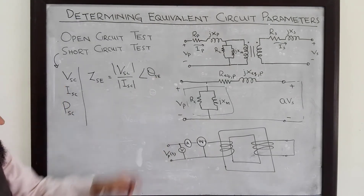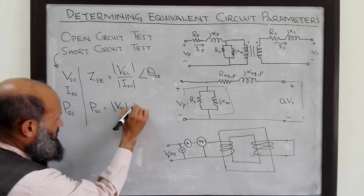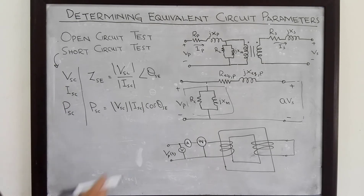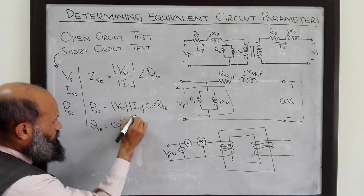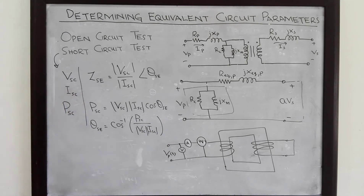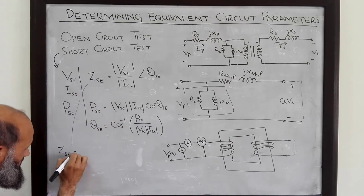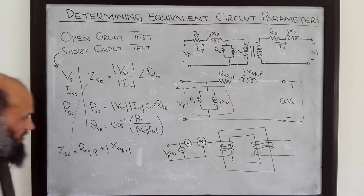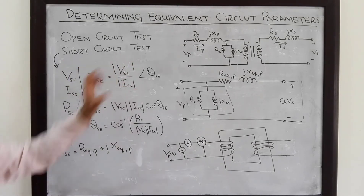To determine theta_se, we use the same relation: P_short_circuit equals V_short_circuit times I_short_circuit times cosine(theta_series). Therefore, theta_series equals the inverse cosine of P_short_circuit divided by V_short_circuit times I_short_circuit. Once theta is determined, the real part of Z_series gives R_eq referred to primary, and the imaginary part gives X_eq referred to primary.